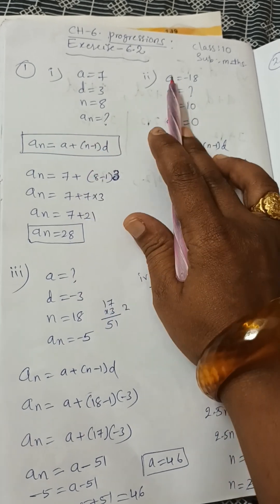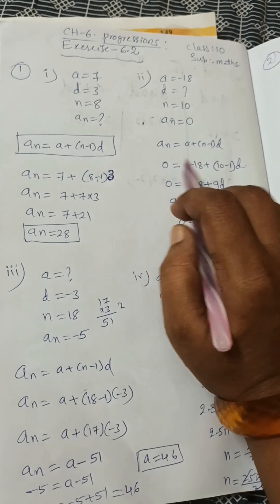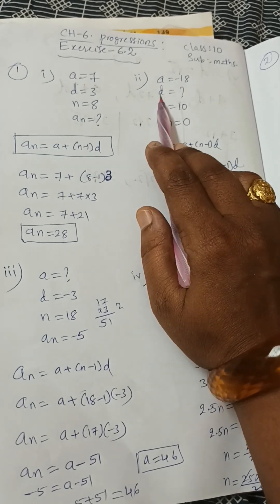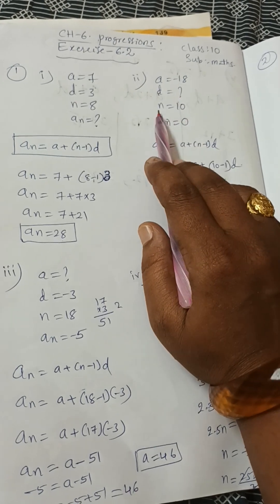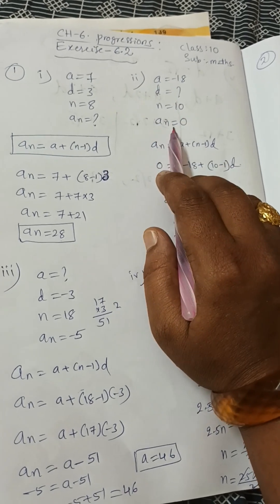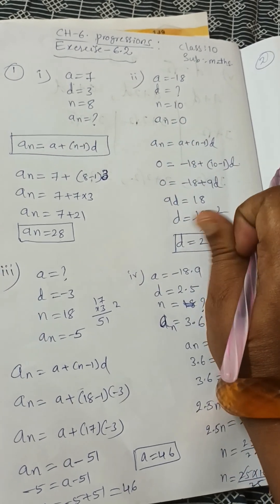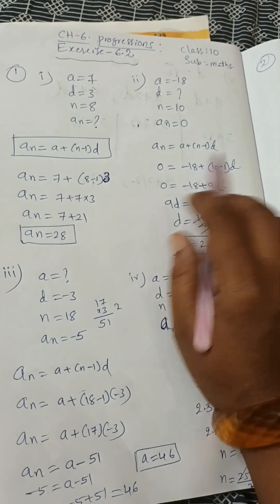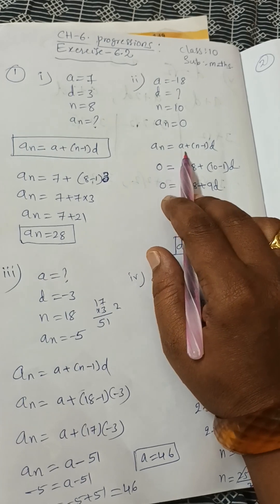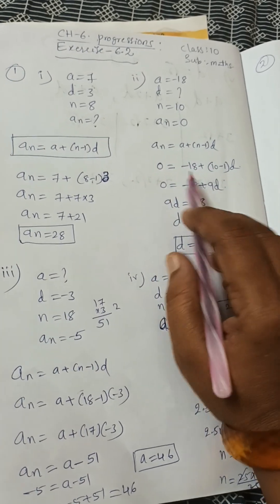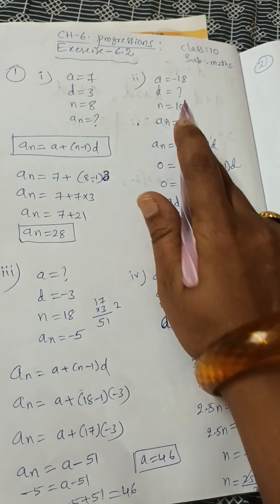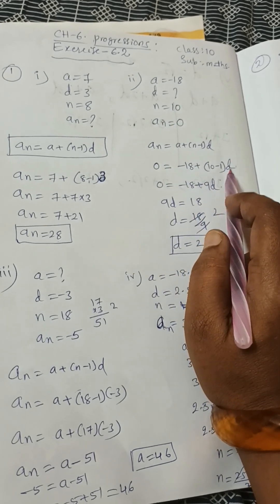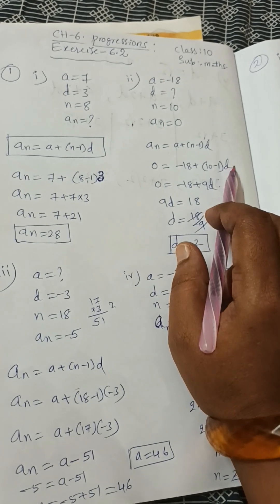For the second bit: a = −18, d is unknown (we need to find it), n = 10, and aₙ = 0, as given in the question. Using the formula aₙ = a + (n − 1) × d, we substitute: 0 = −18 + (10 − 1) × d.